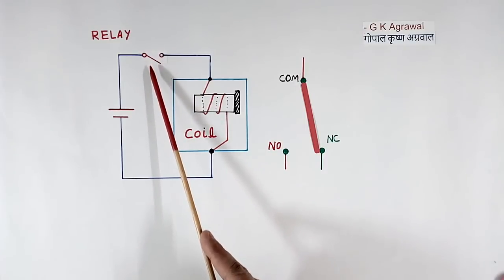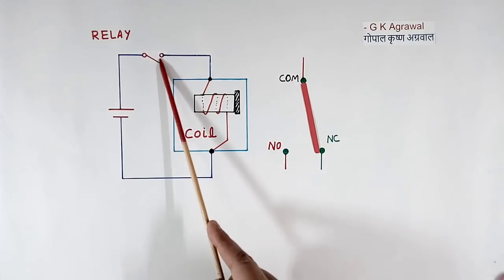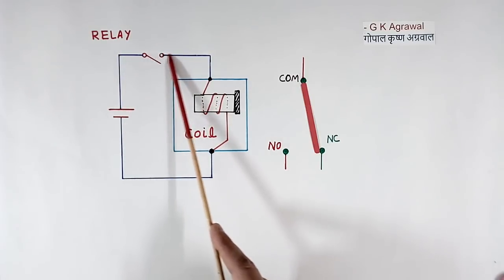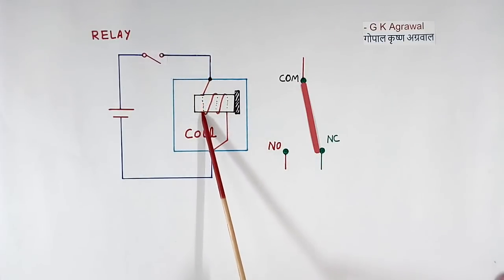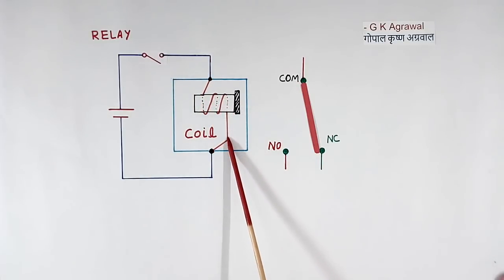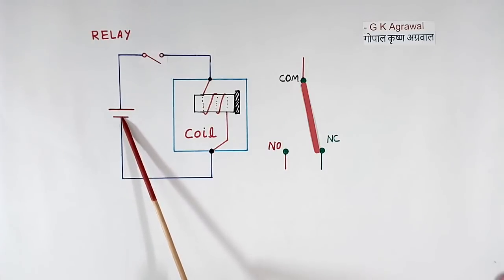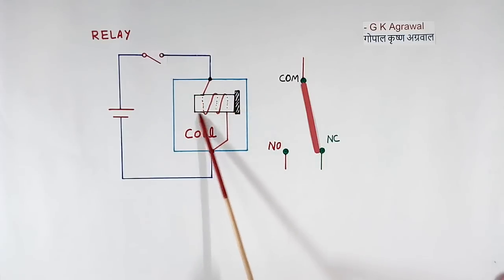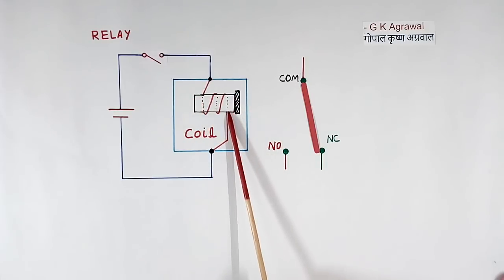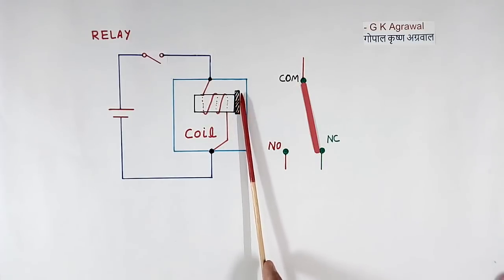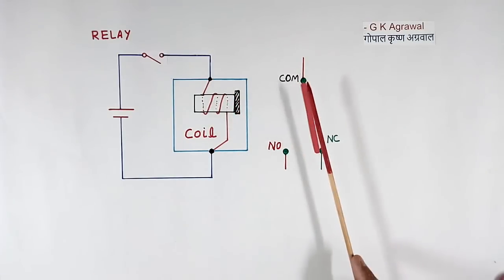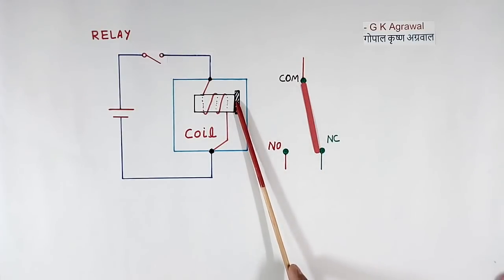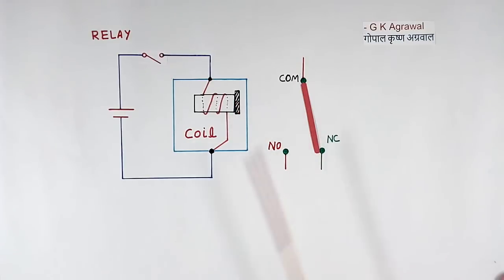Now when we are in the input circuit, current flows and we close the switch — the current goes into the coil. When the coil is energized, the core is magnetized, and the magnetized core pulls the moving contact. This causes the contact to switch position.